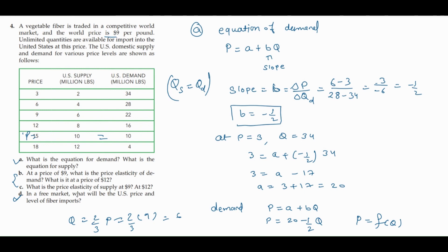In the free market, the U.S. price will be 9 because the world price is below the U.S. equilibrium price. At a price of 9, quantity supplied in the U.S. is 6 million and quantity demanded is 20 million. To find imports, we calculate QD minus QS: demand is 20 million and supply is 6 million — wait, demand is 22 and supply is 16 — so they will import that difference in fiber.